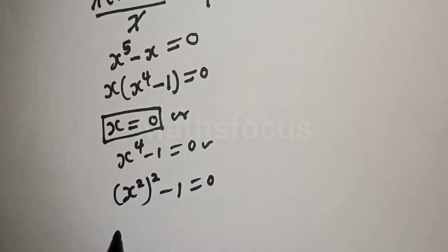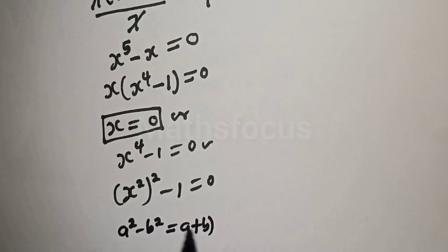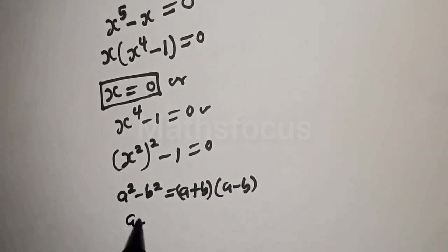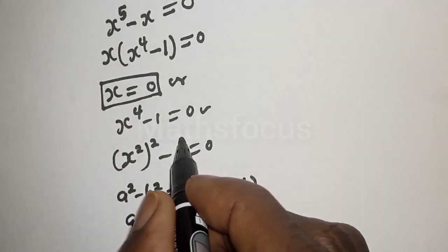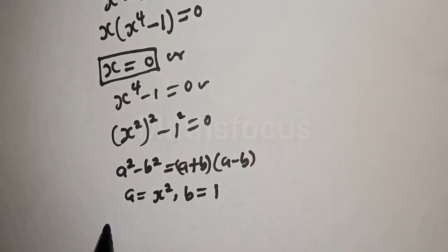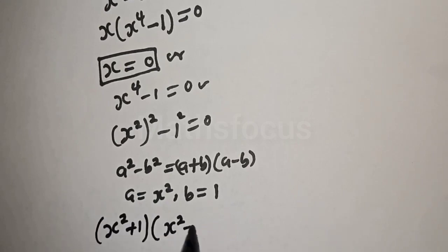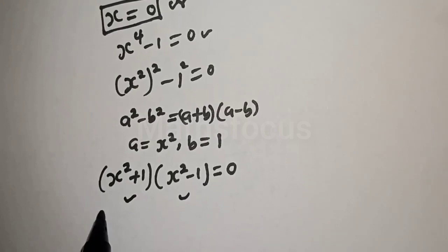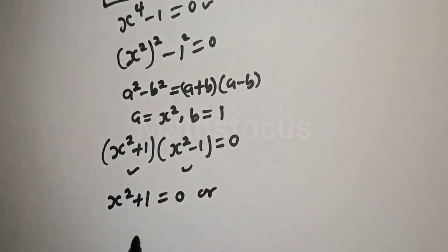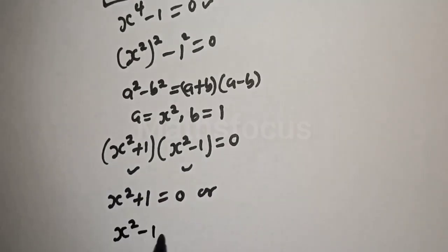We use the rule that a squared minus b squared is equal to a plus b multiplied by a minus b, where a is equal to s squared and b is equal to 1. So we have s squared plus 1 multiplied by s squared minus 1 is equal to 0. There are two cases here also. The first case is s squared plus 1 is equal to 0, or the second case, s squared minus 1 is equal to 0.